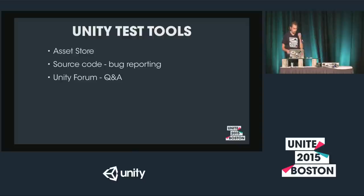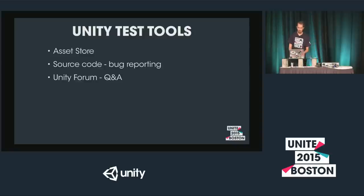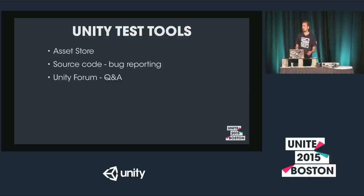Unity Test Tools are available on the Asset Store. The source code is hosted on Bitbucket — or GitHub — where we also take bug reports. If you'd like to contribute, you can create a pull request through Bitbucket. There is also a thread on the Unity forums where people ask questions and help each other. I follow that thread as well, so if you have questions, write them there.